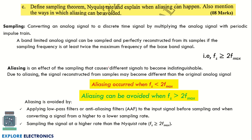The next question asks you to define the sampling theorem, Nyquist rate, explain aliasing, and describe how aliasing can be avoided. This carries eight marks. Write the sampling theorem definition, explain that aliasing occurs when the sampling frequency fs is less than twice the maximum frequency, and that aliasing can be avoided by keeping fs greater than twice the maximum frequency (the Nyquist condition). Explain both conditions clearly in words.